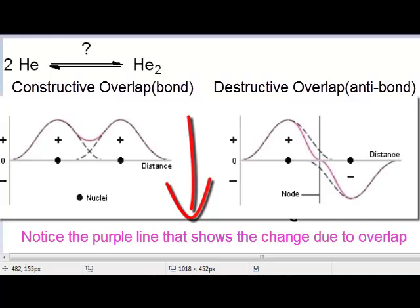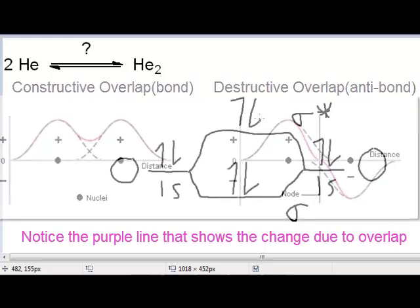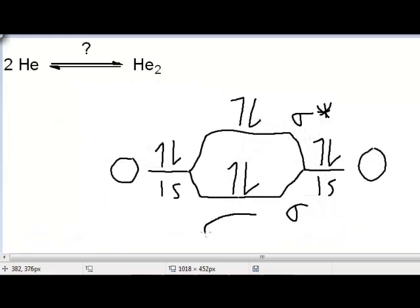But in the sigma star orbital, those electrons form what we call an anti-bond. If we were going to draw the molecular orbital shapes, in the sigma bond we'd see those